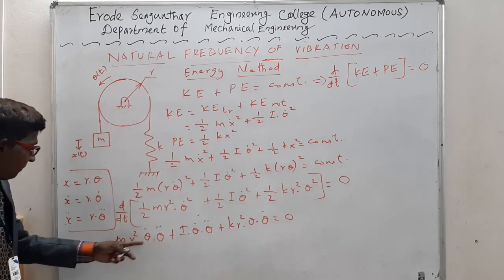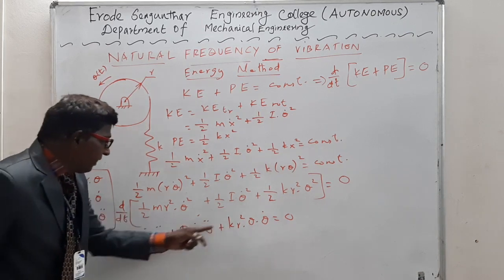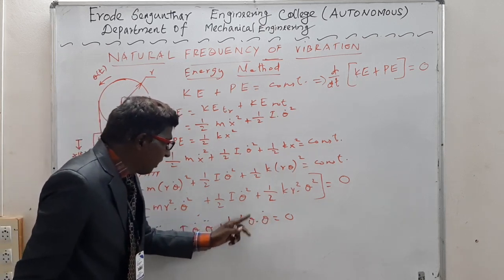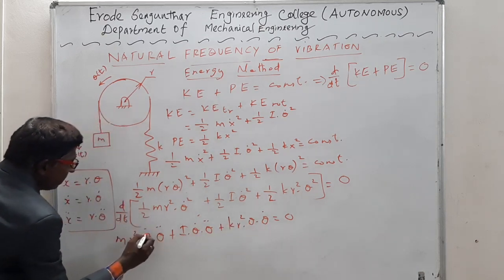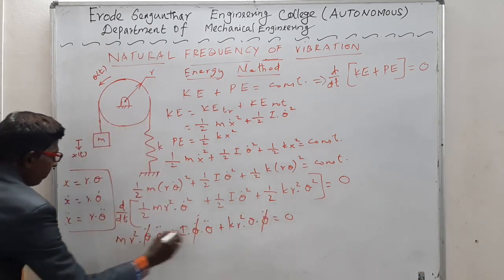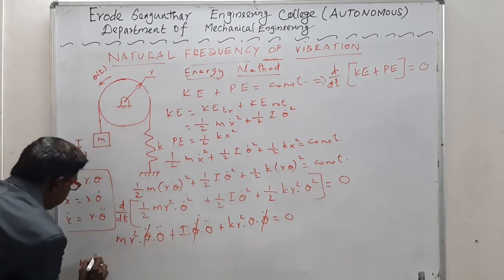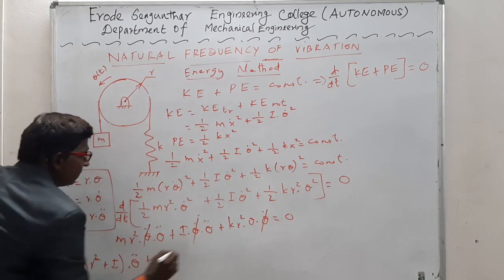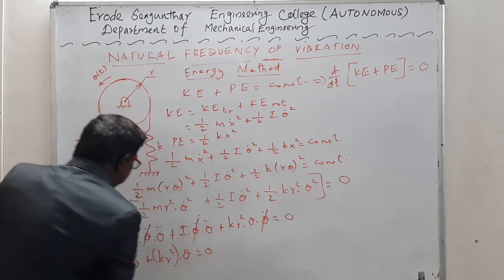The first term has coefficients related to θ̈, the second term has coefficients related to θ̈, and the third term has coefficients related to θ. All three terms have one common factor, which is θ̇. Therefore, we cancel θ̇ throughout. Grouping the remaining terms gives: (mr² + I)·θ̈ + kr²·θ = 0.